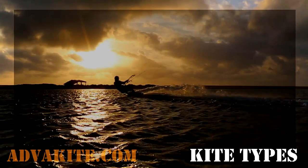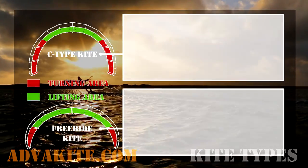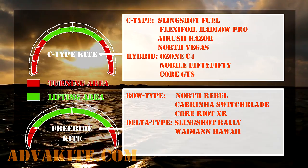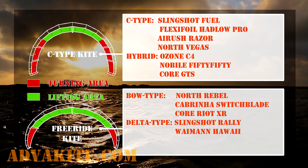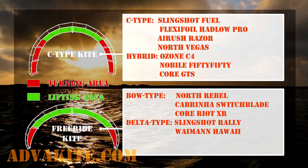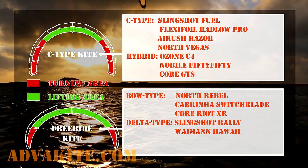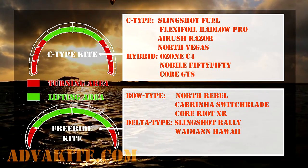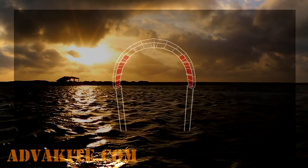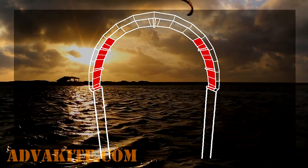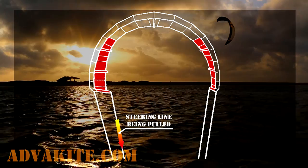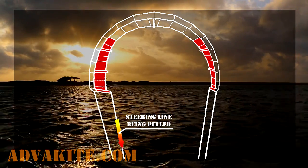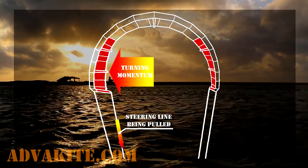I often get questions like what kind of kite is better for learning kite loops. To make it easier, let's define two groups: freeride flat kites and freestyle C-like kites, including hybrids. Both kinds have lifting and turning areas on the canopy. When you steer the kite to make a turn or a kite loop, it gets twisted a bit, exposing the turning area to the airflow. The pressure on one side of the kite increases and forces the kite to turn.